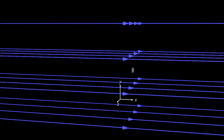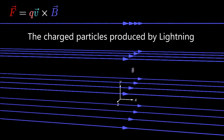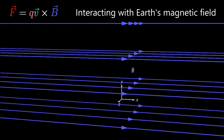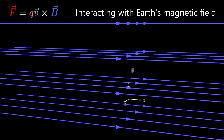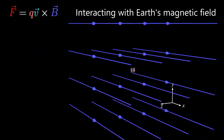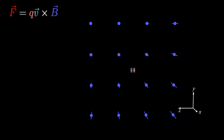Let's examine the motion of an electric charge in a uniform magnetic field. Because the magnetic force depends upon the cross product of the charge velocity and the magnetic field, the motion is usually three-dimensional. We will start with the special case where the initial motion is perpendicular to the magnetic field. In this case, the resulting motion will be confined to a plane perpendicular to the field.